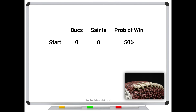Now at the end of the first quarter we've gathered more information and can change our assessment. The Bucks are ahead 10-7. Are you still 50% certain they're going to win? If you were 50% at 0-0, you should be more confident with a 3-point lead. So let's say you increase your assessment from 50% to 55%. That's the same as saying your deltas have increased from 50 to 55. The exact number doesn't matter — you just need to understand that the percentages must increase.